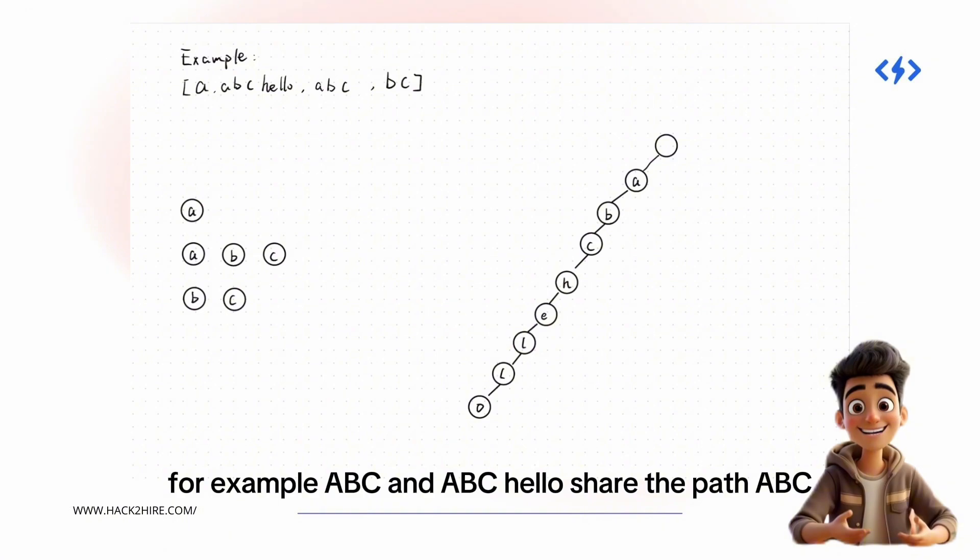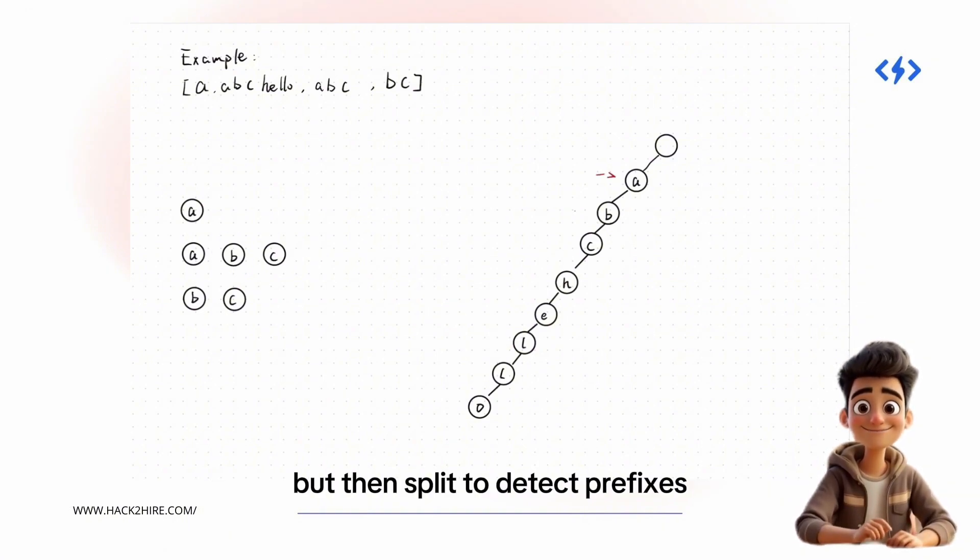For example, abc and abc hello share the path a, b, c, but then split.